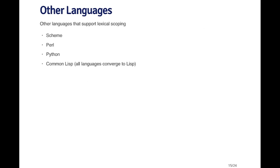There are a number of other languages that support lexical scoping. Some examples are Scheme, Perl, Python, and Common Lisp. There's a well-known computer science theorem that all languages eventually converge to Lisp. So lexical scoping is not an obscure feature — it's actually very common in a number of other programming languages.